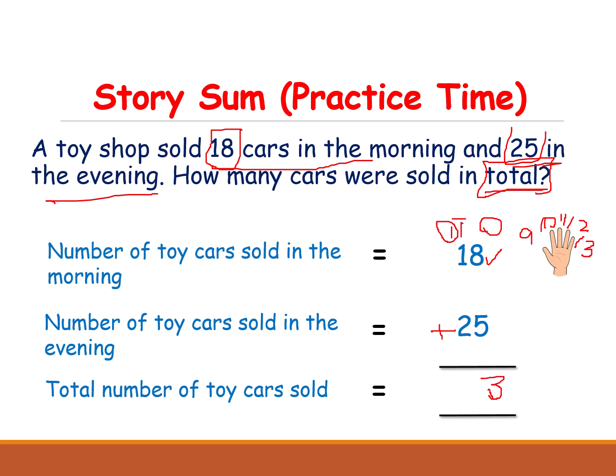Now add the tens place with the carried 1. It's 1 plus 1 equals 2, then 2 plus 2 equals 4. So how many toy cars were sold in the morning and evening? 43.